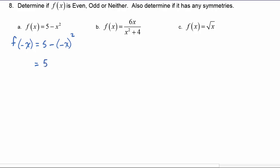So that's five minus... now negative x quantity squared is equal to x squared, so we can see very easily this is exactly the same as our original f of x. Therefore, f is even and will have symmetry with respect to the y-axis.